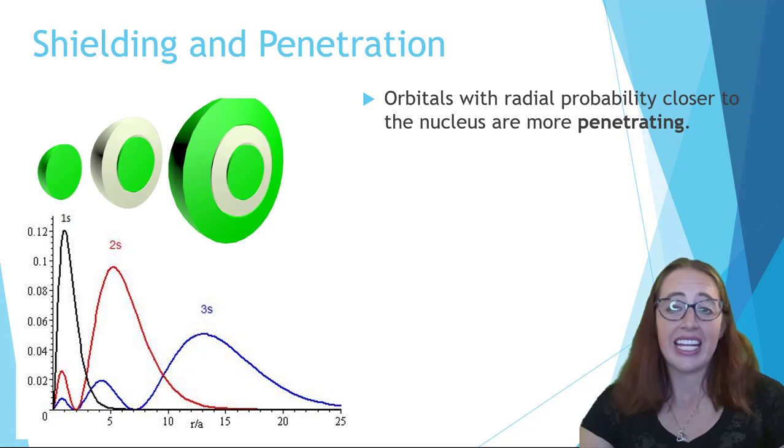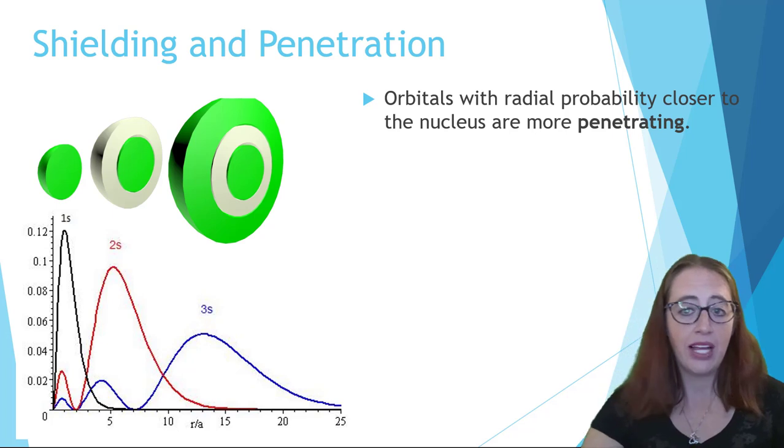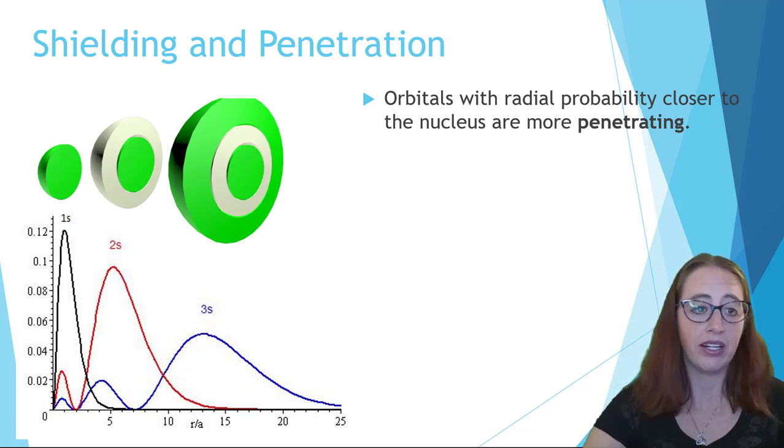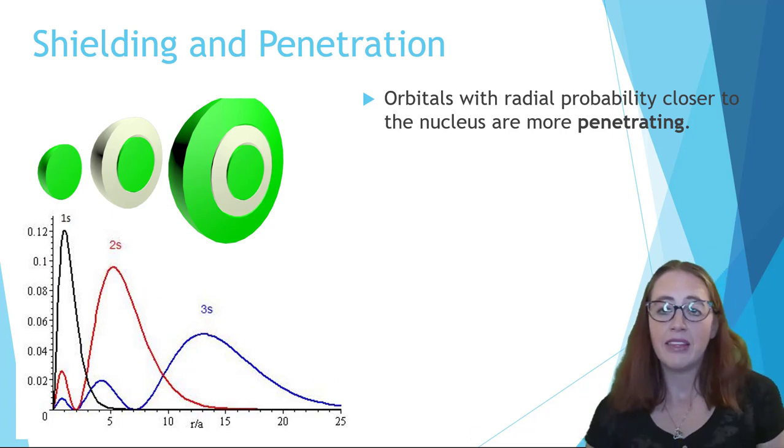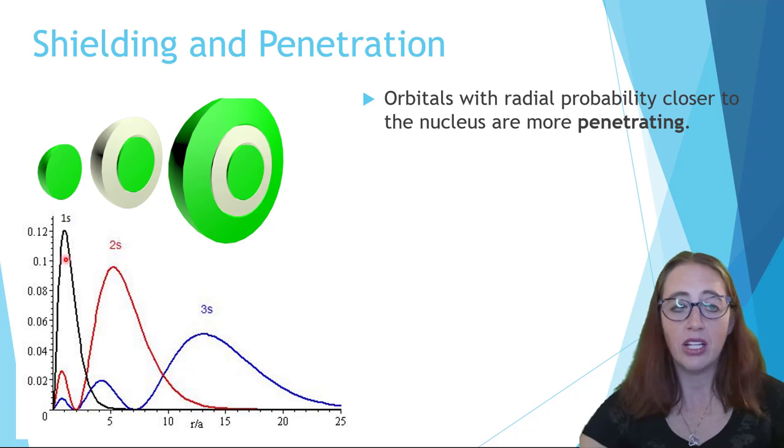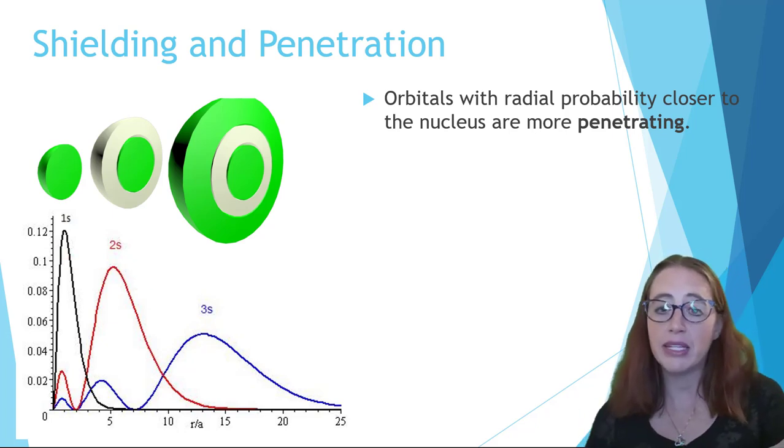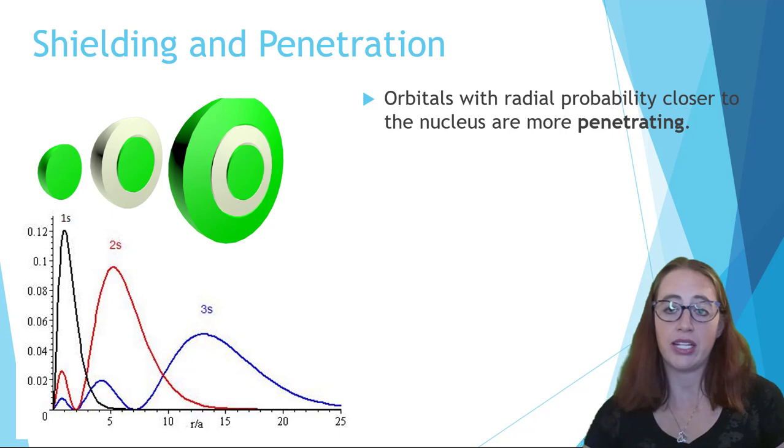The x-axis is the distance from the nucleus. Notice how the 1s orbital has significantly more of its density closer to the nucleus than the 2s orbital. The 2s orbital has it closer to the nucleus than the 3s orbital. The fact that the 1s is closer to the nucleus than the 2s and 3s means that it is more penetrating.